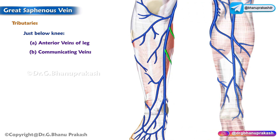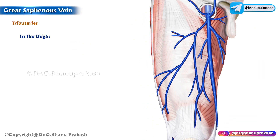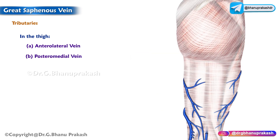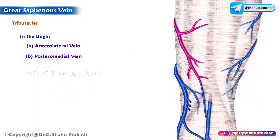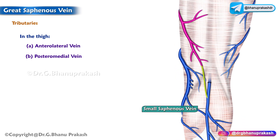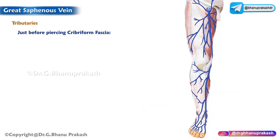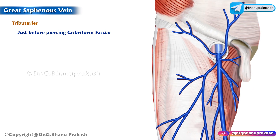The anterior vein of the leg extends diagonally upwards, forwards, and medially across the shin and joins the great saphenous vein. There are also smaller veins arising from the calf which communicate with the small saphenous vein. In the thigh, the anterolateral vein commences in the lower part of the front of the thigh and joins the great saphenous vein in the upper portion. Another important vein is the posteromedial vein, also called the accessory saphenous vein, which commences from the posteromedial aspect of the thigh and joins the great saphenous vein, sometimes also communicating below with the small saphenous vein.